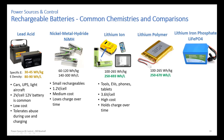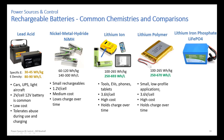The lithium ion 18650 cells look like double-A batteries but are bigger in diameter and length — the number 18650 actually encodes the dimensions. You can put these together to make bigger batteries. A lot of electric bike batteries, electric scooter batteries, and even some Tesla batteries are made up of 18650 cells built up into larger packs. In low-profile devices you'll find lithium polymer batteries.